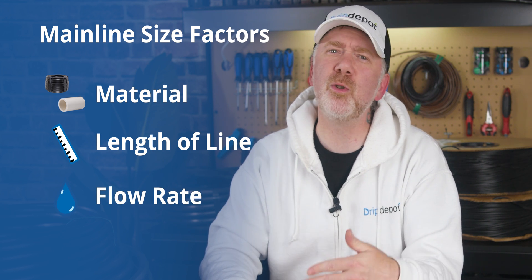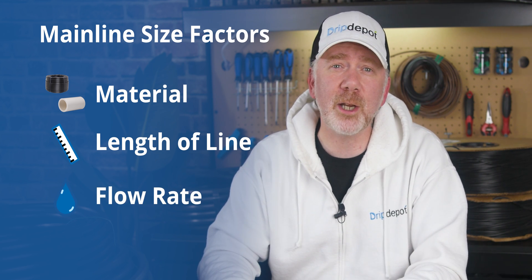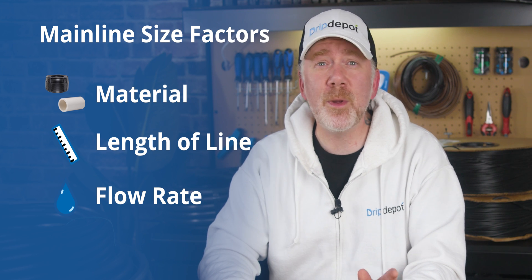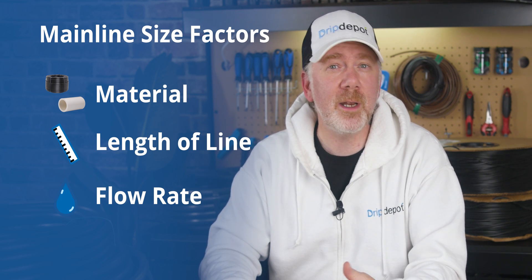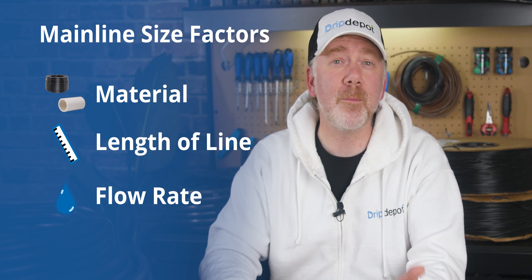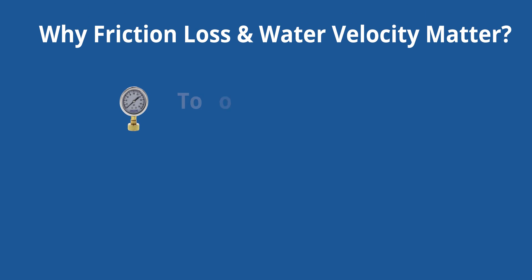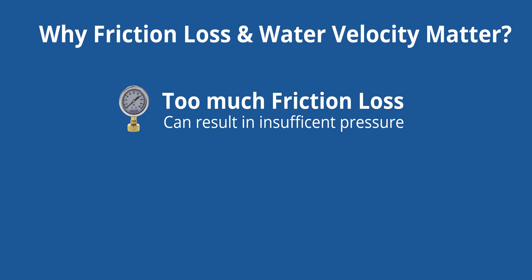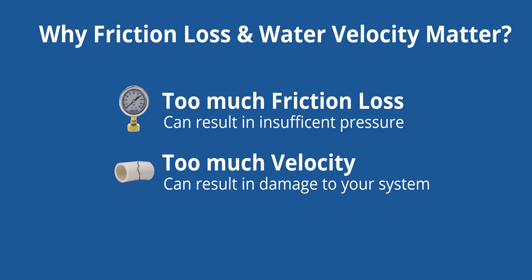The material used is usually PVC or poly in irrigation. These variables determine how much friction loss will be incurred and the velocity of the water inside the mainline. Friction loss and velocity matter in irrigation because too much friction loss can cause a lot of pressure loss, and you may not end up with sufficient pressure to achieve optimal operation of your emitters. Too much velocity can even cause damage to components in your system, so it is very important to account for both when sizing a mainline.